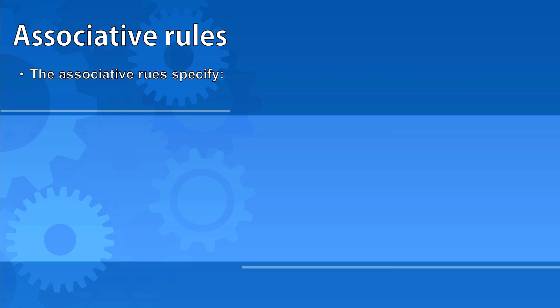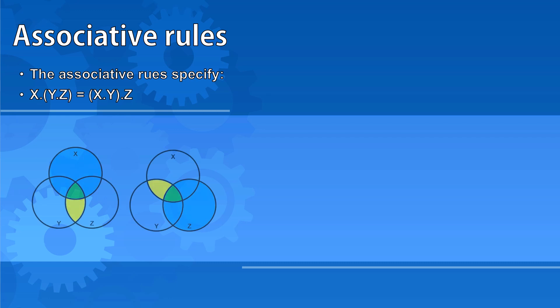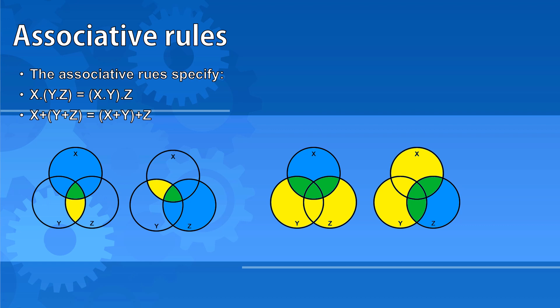Associative rules specify that x AND the result of y AND z is the same as saying the result of x AND y AND z. You can see from these Venn diagrams that whether we first look at the area between y and z and AND it with x, or look at the area between x and y and AND it with z, we still end up with the same green section in the middle. In addition, x OR the result of y OR z is the same as the result of x OR y OR z, and both of these represent the entire shape with all three circles.